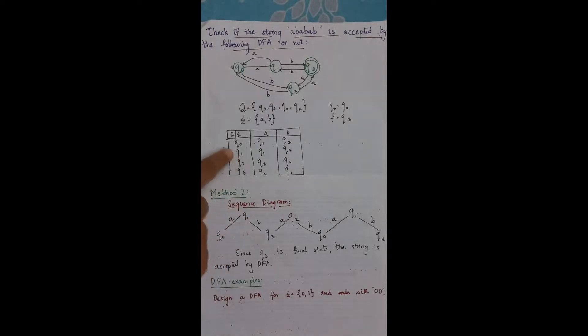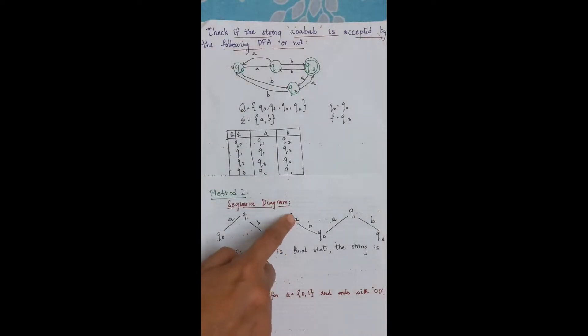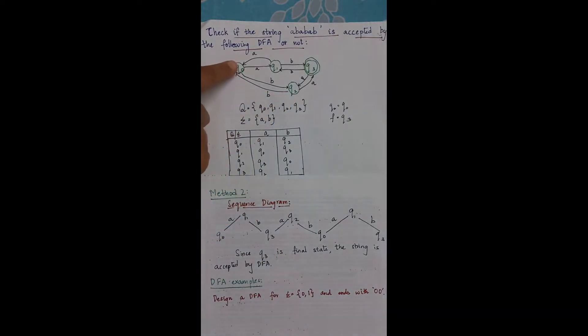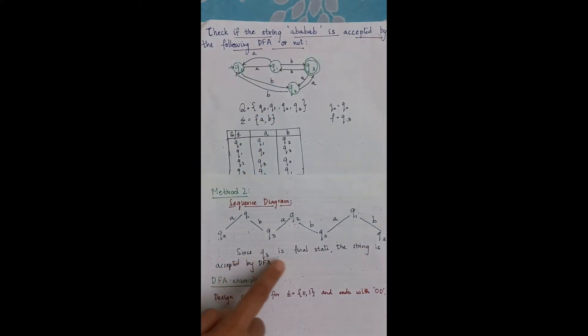q0 with a leads me to q1. Now q1 on b takes me to q3. q3 on a takes me to q2. q2 with b takes to q0. q0 with a takes me to q1. q1 with b takes me to q3. Since q3 is the final state, the string is accepted by DFA.